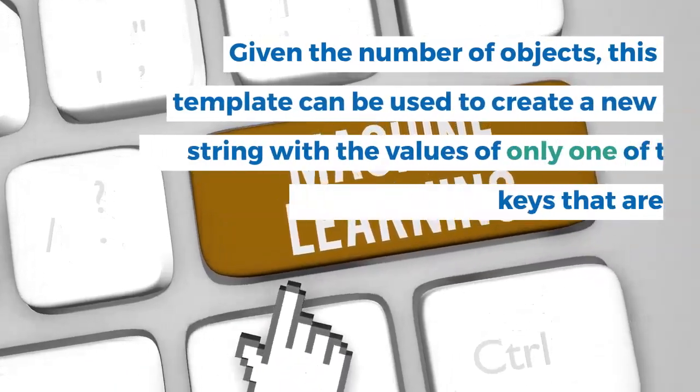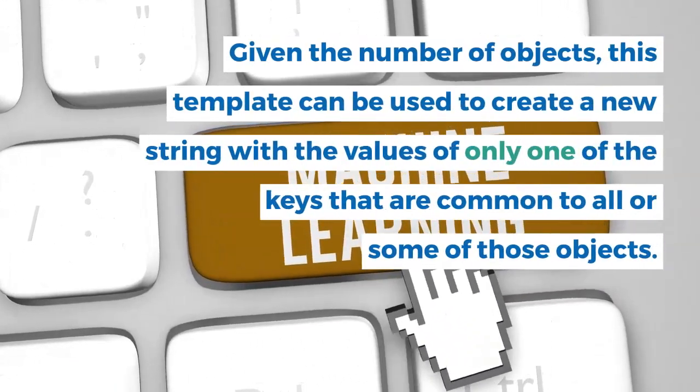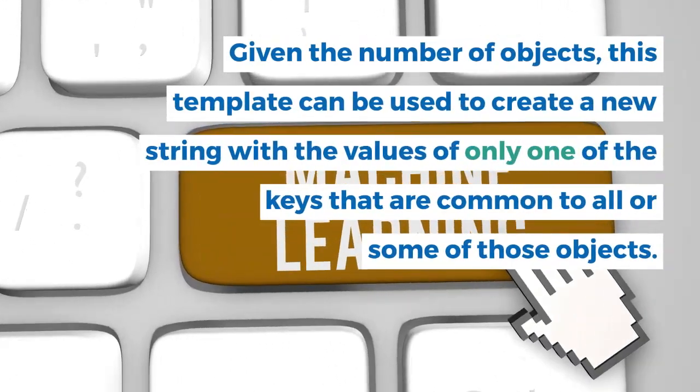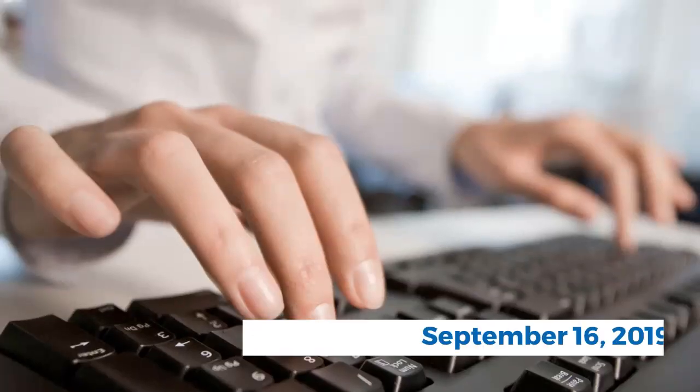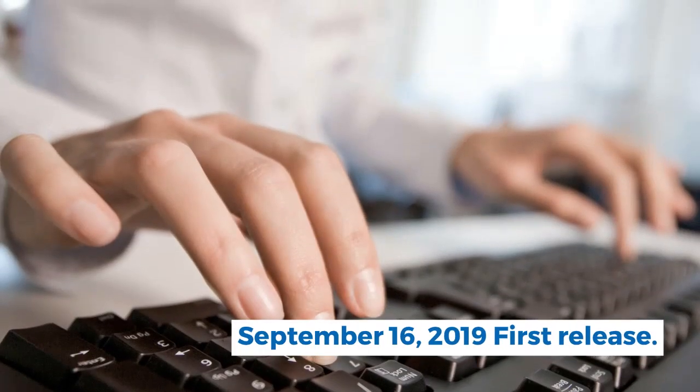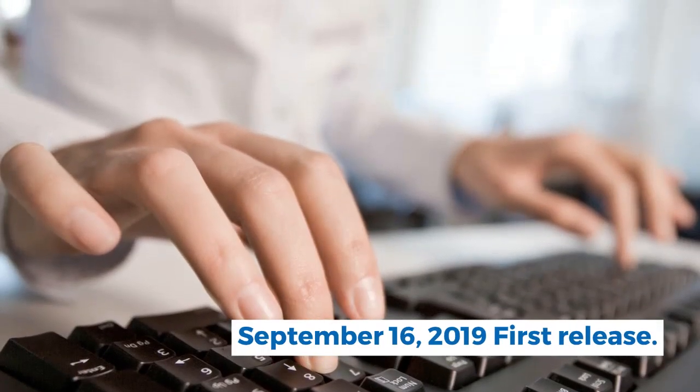The Object Matrix String custom variable template is a variable template for the Google Tag Manager Community Template Gallery. Given a number of objects, this template can be used to create a new string with the values of only one of the keys that are common to all or some of those objects.